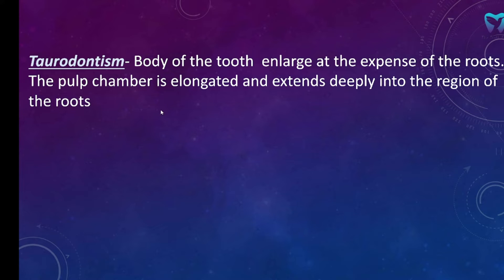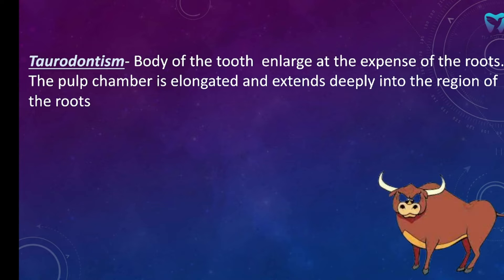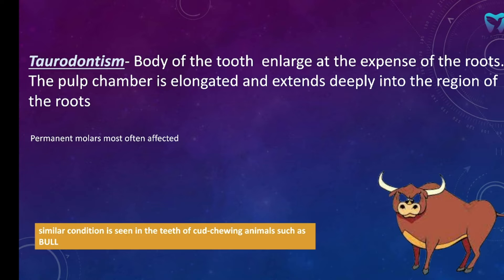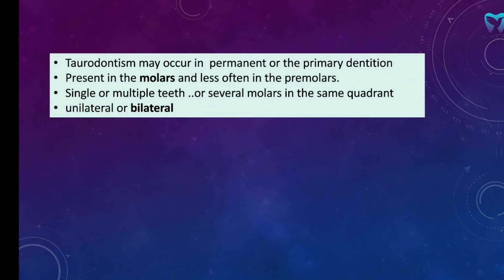The body of the tooth enlarges at the expense of the roots, and the pulp chamber is elongated and extends deeply into the region of the roots. The permanent molars are most often affected. Taurodontism may occur in permanent or primary dentition. It is present in molars and less often in premolars. Single or multiple teeth can be affected, or all the molars in the same quadrant, and the condition can be unilateral or bilateral.